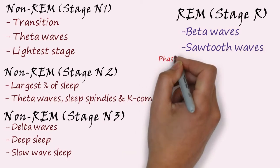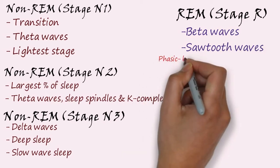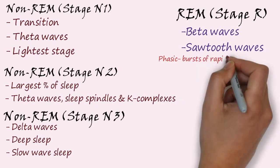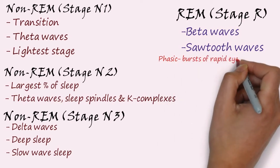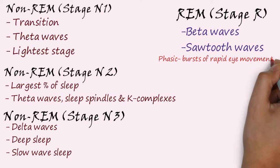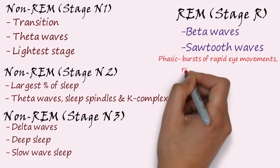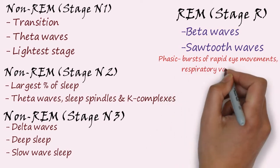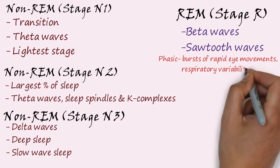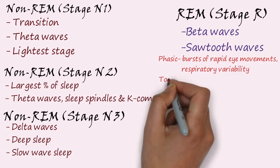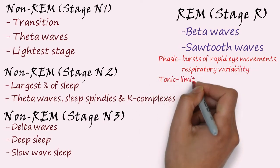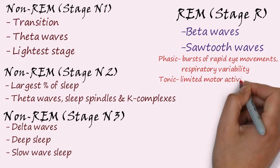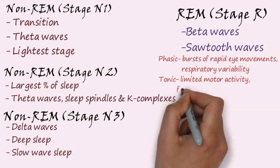Phasic REM is characterized by bursts of rapid eye movements and respiratory variability, whereas tonic REM is characterized by limited motor activity and few eye movements.